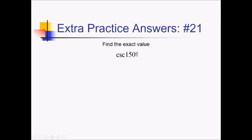To figure out cosecant of 150, let me get a reference angle. 150 is 30 degrees away from the 180 line. Since we're above the x-axis and cosecant is related to sine — the y value of the angle — we're going to be positive up there. So this is positive cosecant of 30 degrees. Rewriting as 1 over sine of 30: sine of 30 is 1/2, so this is 1 over 1/2, which keep-change-flip gives us 2.